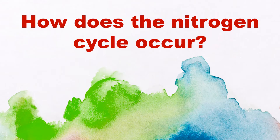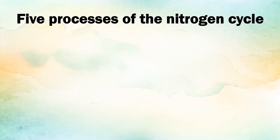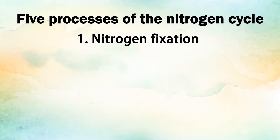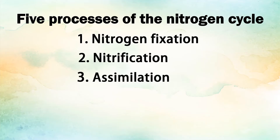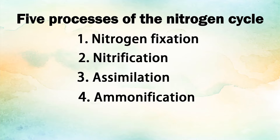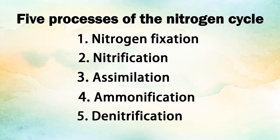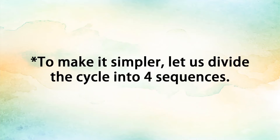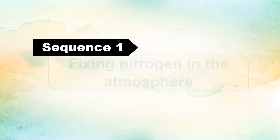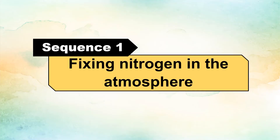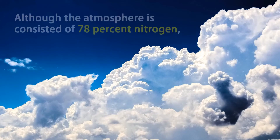How does the nitrogen cycle occur? There are five processes occurring in the nitrogen cycle: nitrogen fixation, nitrification, assimilation, ammonification, and denitrification. To make it simpler, let us divide the cycle into four sequences.